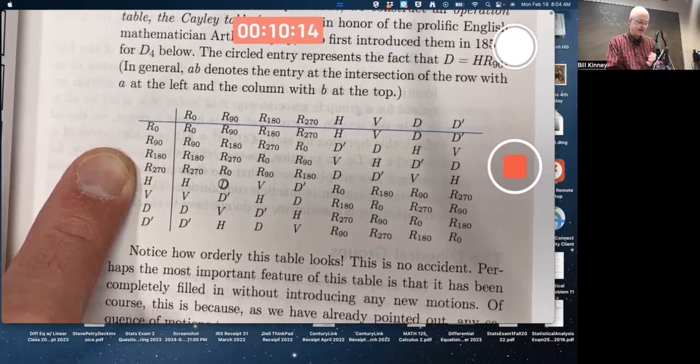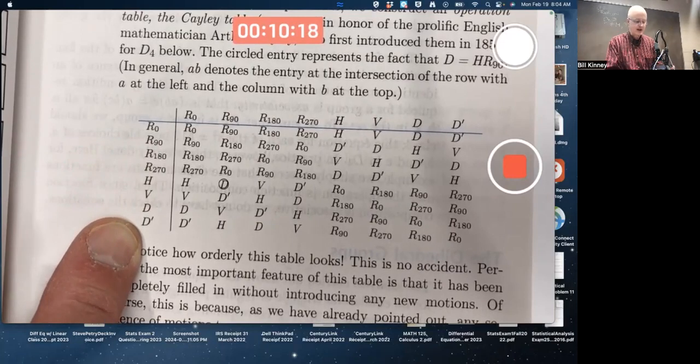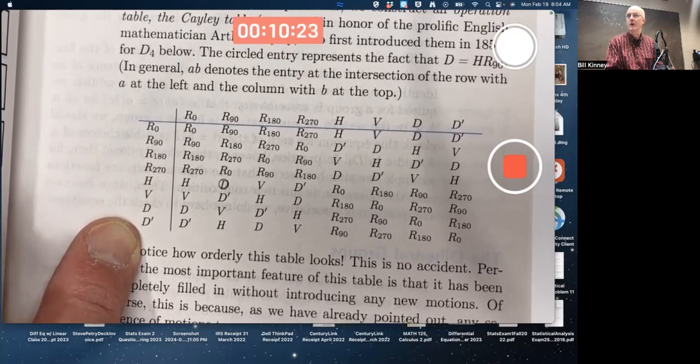So that's not going to have order 4. It's going to have to have some of these flips, these reflections, H, V, D, or D' in them, if we're going to generate another subgroup of order 4.